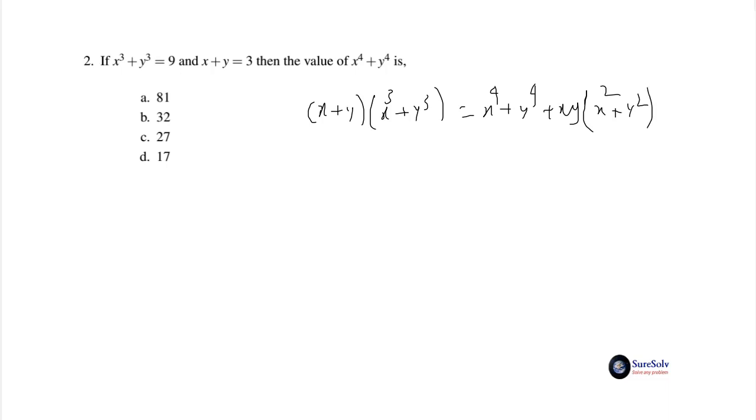This will be equal to 9 multiplied by 3, that is 27. So if we find the value of xy and x² + y², we will get the value of x⁴ + y⁴, but we always try to reduce the number of items that is to be evaluated.